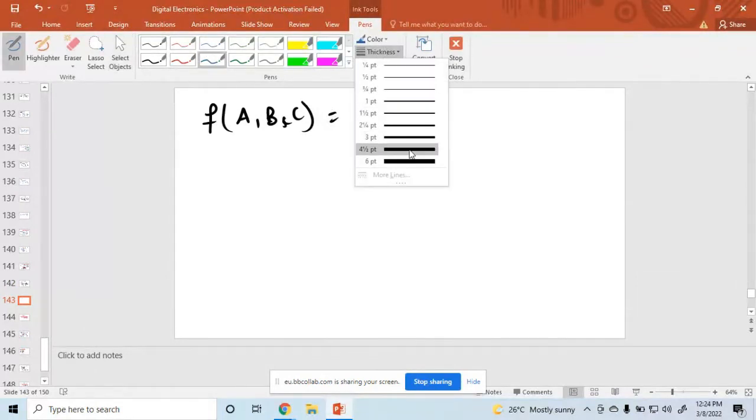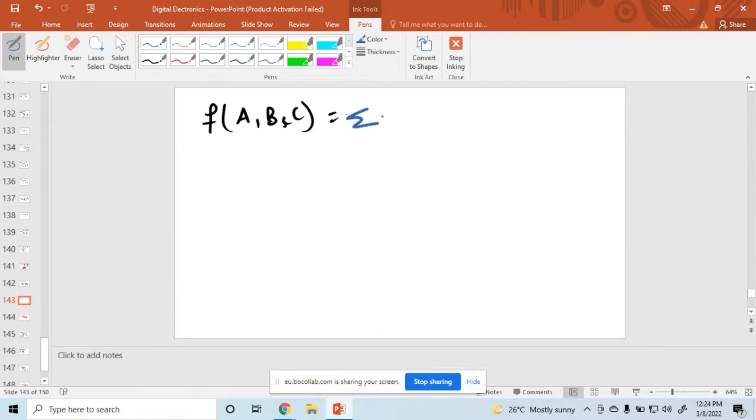The function equals the mean of minterms 1, 4, 7, and here the concept of don't care is 2 and 3.